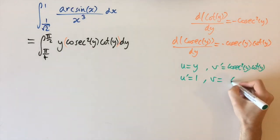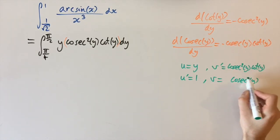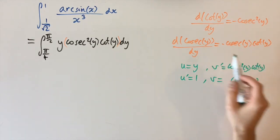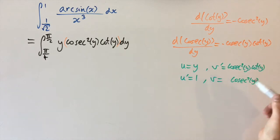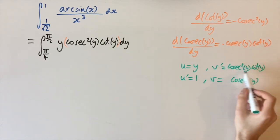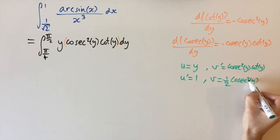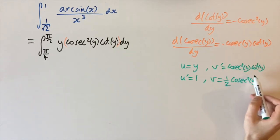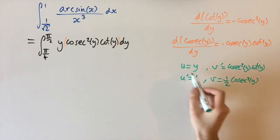To find v, we think backwards. Differentiating cosec squared(y) using the chain rule gives 2 cosec(y) times minus cosec(y) cot(y). This matches our v' up to a constant. Balancing constants, v equals minus 1/2 cosec squared(y), since the 2 cancels the half and the minuses cancel, leaving exactly cosec squared(y) cot(y). This is one of the trickiest parts of the question.